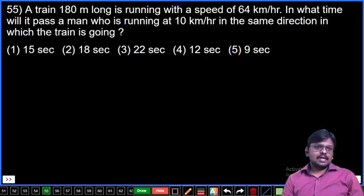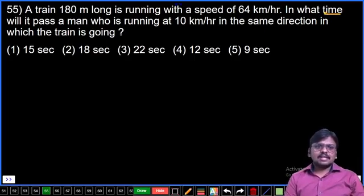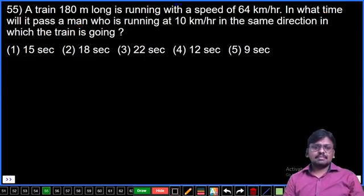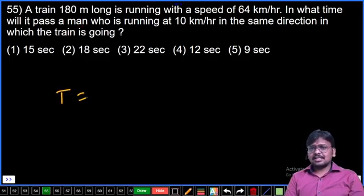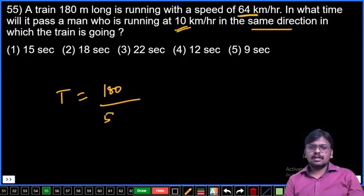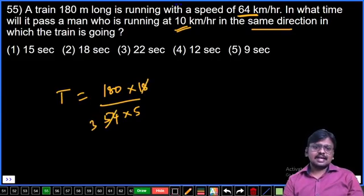Question number 55: A train 180 meters long is running with a speed of 64 km per hour. In what time will it pass a man running at 10 km per hour in the same direction? Time equals distance by speed. Distance is 180 meters. Same direction, so speed is 64 minus 10 equals 54 km per hour. Convert to meters per second: 54 times 5 by 18 equals 15. So 180 by 15, which is 12 seconds. Fourth option.